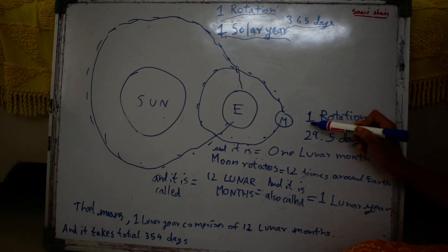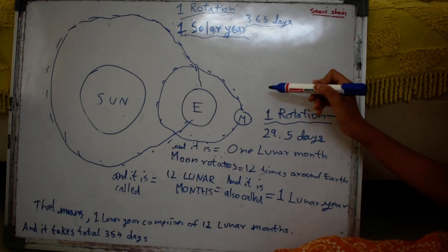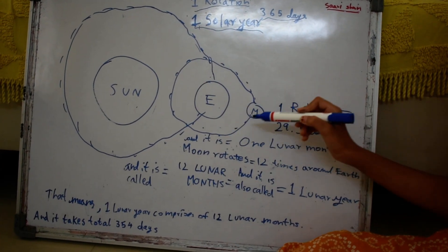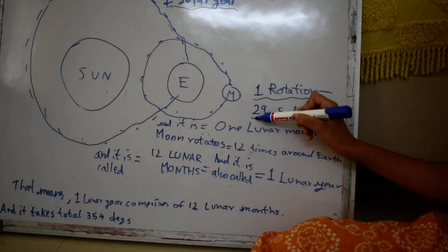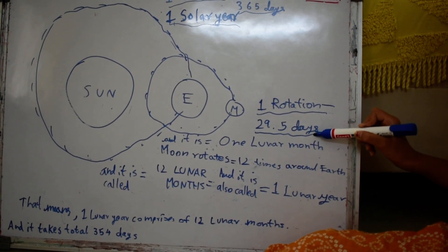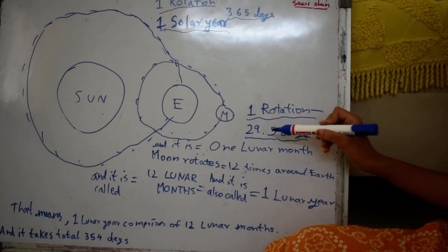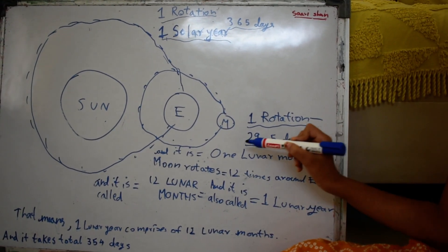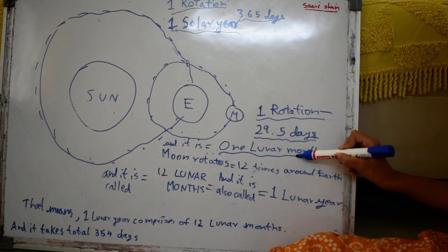And it is called one rotation. And to complete one rotation, the moon takes 29.5 days. And those 29.5 days is called one lunar month.